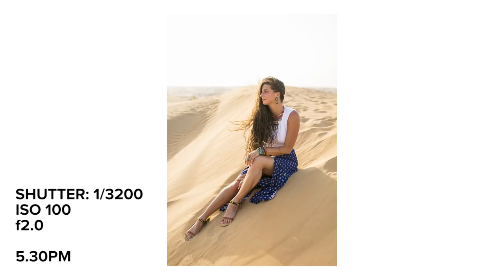In this image you can see that the sky is blown out. I had my aperture at f2.0, my ISO at 100, and my shutter speed at 1/3200, because I wanted to get a nice clean shot of the landscape with Christina.